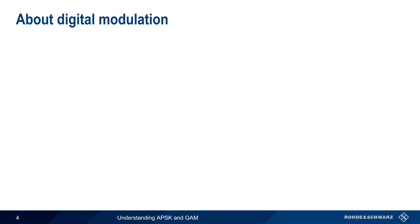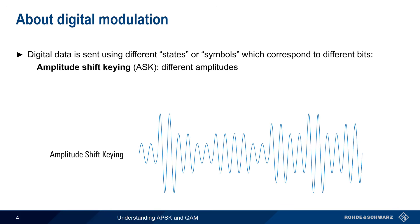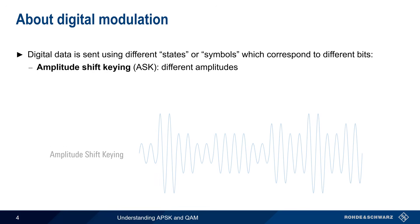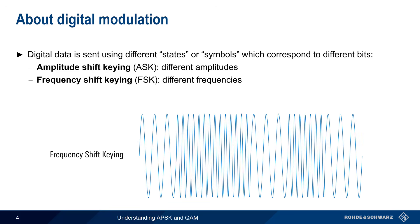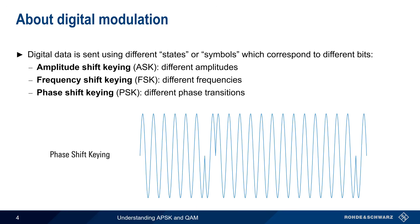Digital or binary data is sent using different states, or, more properly, symbols, which correspond to different bits. The carrier is shifted between these different states depending on the bit pattern that's to be sent. In Amplitude Shift Keying, the carrier shifts between different amplitudes. In Frequency Shift Keying, the carrier shifts between frequencies. And in Phase Shift Keying, sudden shifts in the phase of the received signal are used to indicate different states.